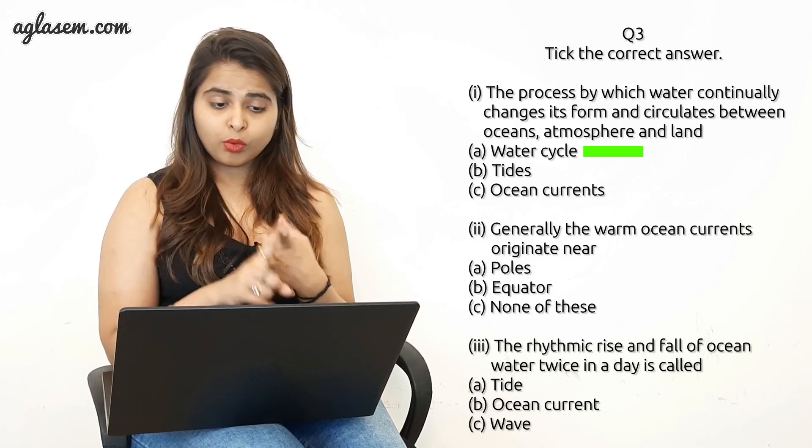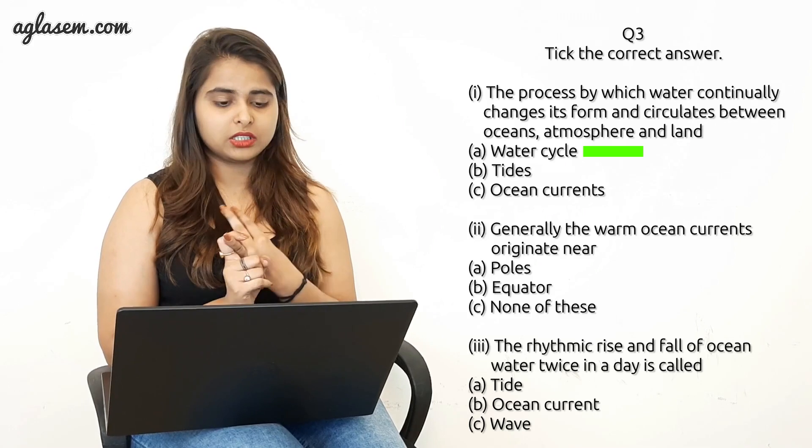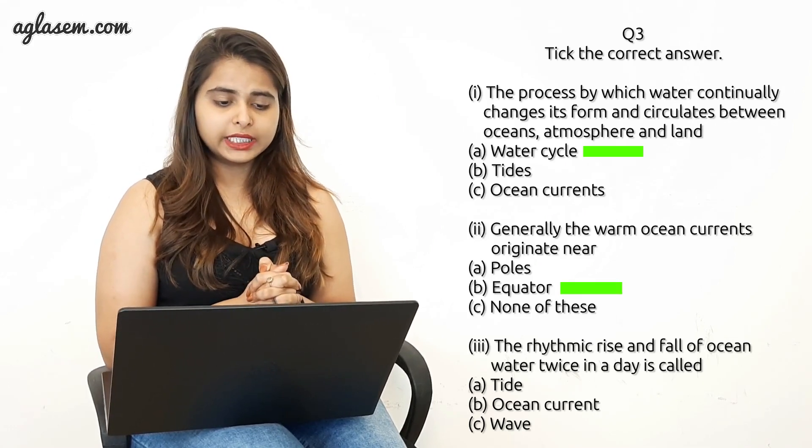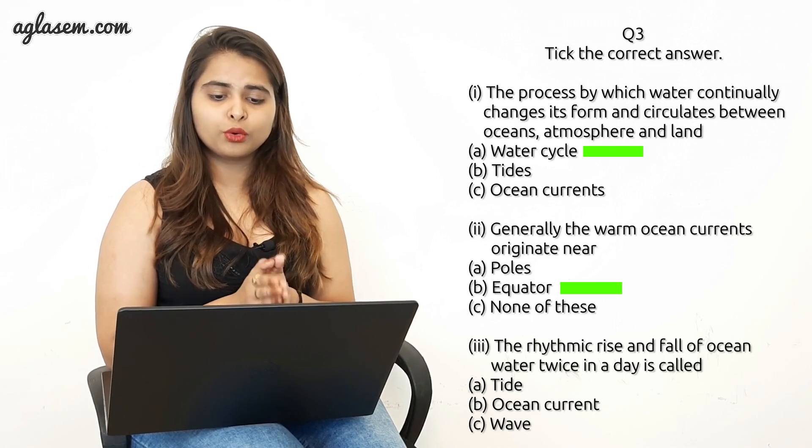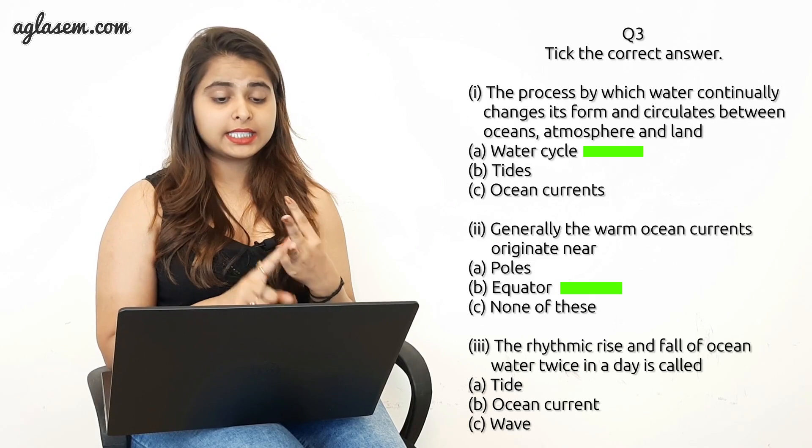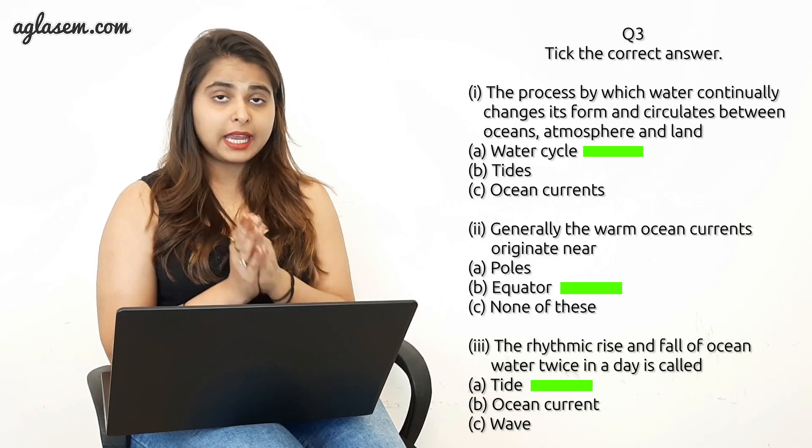The third is the rhythmic rise and fall of the ocean water twice in a day is called: A) tide, B) ocean current, C) waves. Your answer will be A, tide.